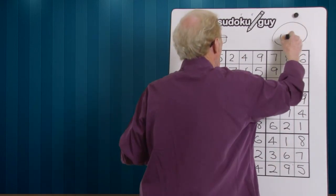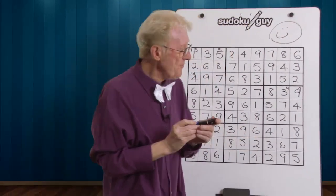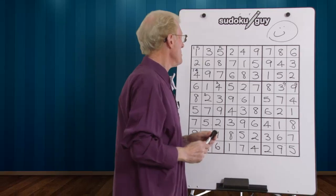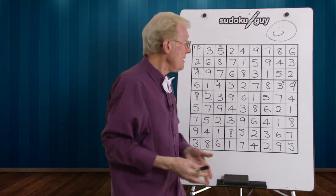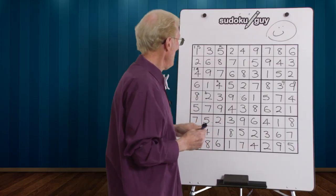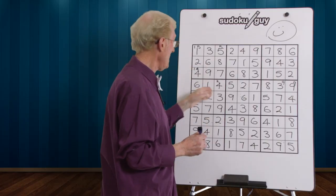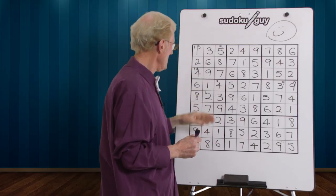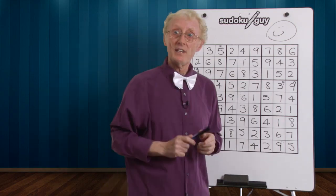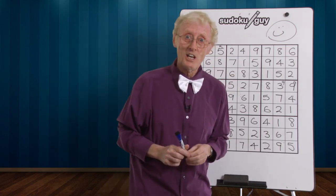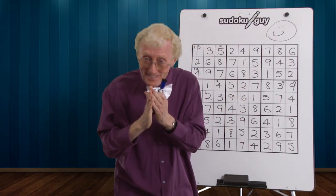Well done! We did it. And what did we use? We used the principle of exclusion, we used the principle of not worrying if you miss something because something will come up later on. And also, we looked at the value of putting two little numbers in a block, because it enabled us to solve other numbers down the road. So far these are still very easy puzzles - don't worry, they get harder. So that's it for the day. Namaste. Bye for now.